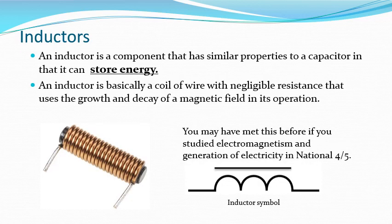An inductor is a coil of wire. It behaves in some respects like a capacitor because it can store energy within its magnetic field. The ideal inductor has no resistance at all — not strictly correct, but for the purposes of our calculations we assume it has no resistance whatsoever. It works when we have an increase or decrease in current — a growth or decay of a magnetic field.